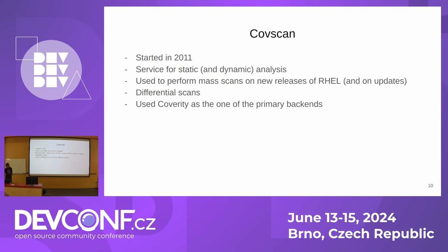This idea existed at Red Hat for more than a decade. It had a name: CoScan. CoScan was a project that started in 2011. It was a service for static and dynamic analysis. Since RHEL 7, we have been performing mass scans before new releases of RHEL and on updates. One of the key features of CoScan was differential scans, and it used Coverity as one of the primary backends.